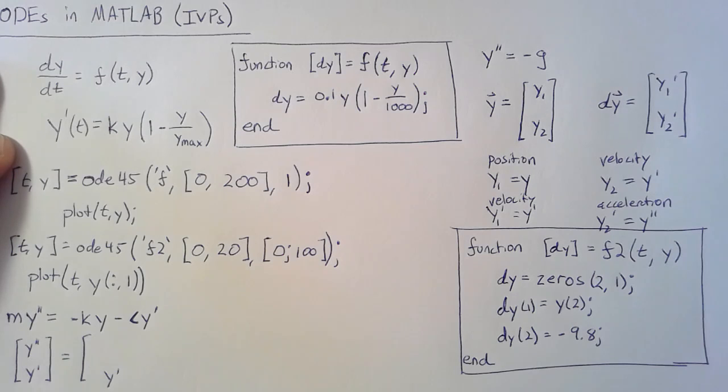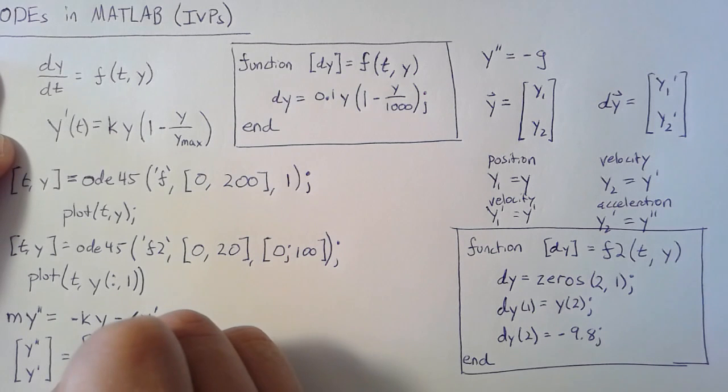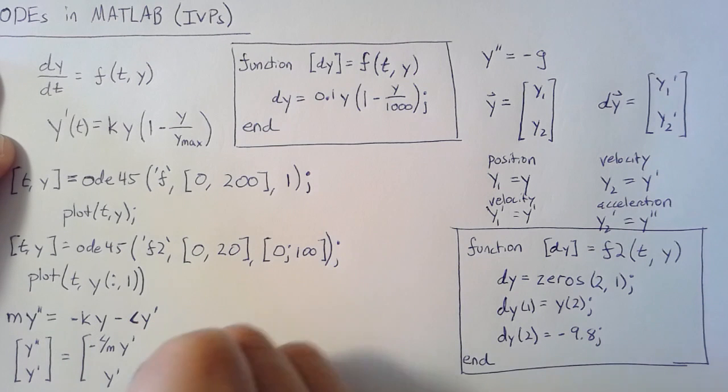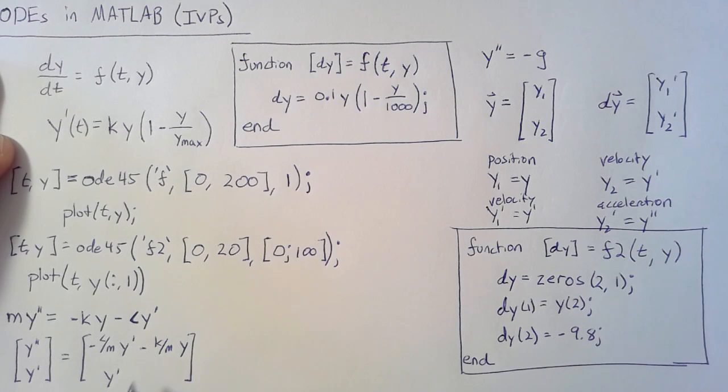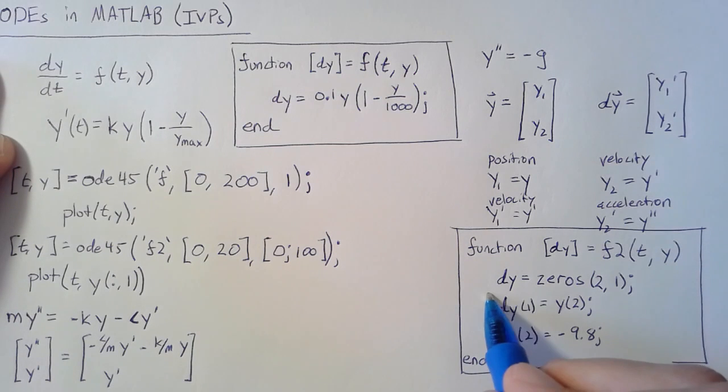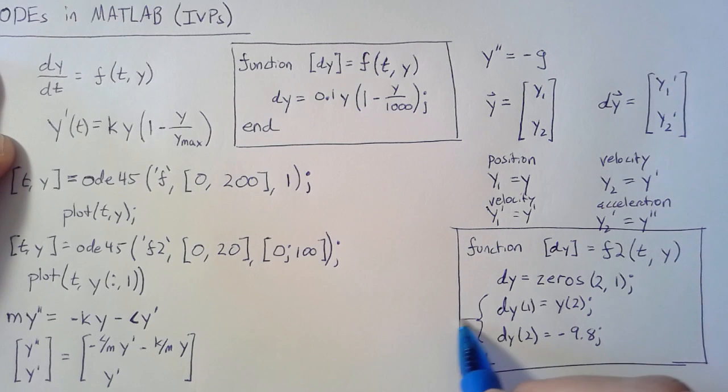But this top one is going to be negative c over m times y' minus k over m times y. Of course, MATLAB doesn't understand this, so we need to actually do something that can plug into these values.